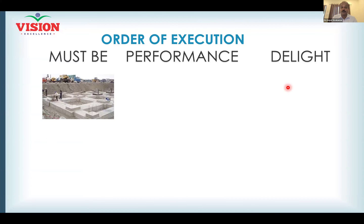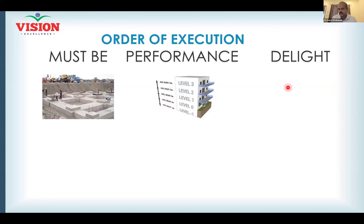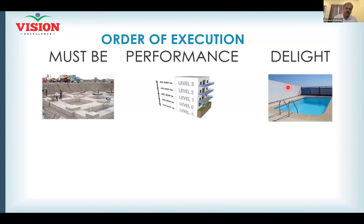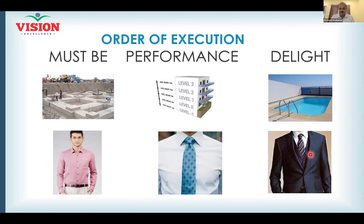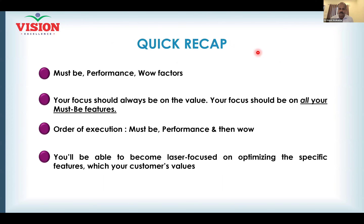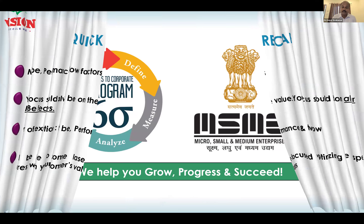This is the order of execution: first, foundation — must-be — no compromise, no budget limitations excuse. Then your building — performance. Finally, your garden area and swimming pool — delight. Similarly, shirt, tie, then coat. You know the order of wearing them. If you change the order — wearing the coat first and then the shirt — the same situation arises if you mishandle features while developing a product or service. That's it from Kano analysis. I hope you enjoyed and understood how to use this tool and connect it with your survey. The starting point is survey, which becomes the input to your Kano analysis.